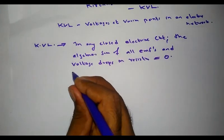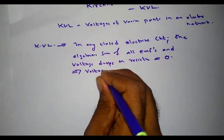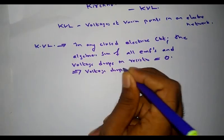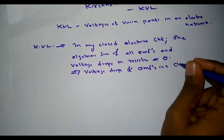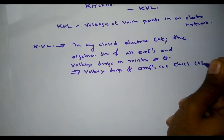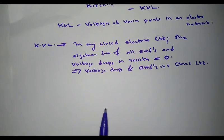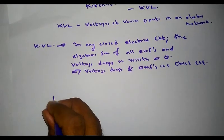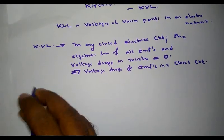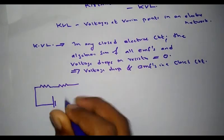This law actually relates the voltage drops and EMFs in a closed circuit. Let us consider an example of a closed electrical circuit as shown — a series electrical circuit consisting of two resistors R1 and R2.